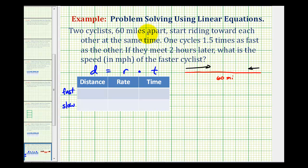Notice how the total distance traveled by both of them is 60 miles, but we don't know the distance that each of them travels. So we'll let the distance traveled by the faster cyclist be d_f and the distance traveled by the slower cyclist d_s. And we do know that d_f + d_s equals 60 miles.